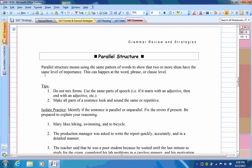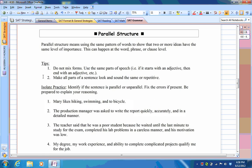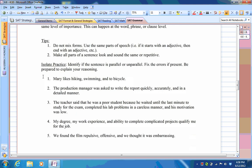The other type of error we're going to talk about is parallel structure. So in this case, we want everything that we say to be structured the same way. We never want to mix up forms. We only use the same part of speech. So if it starts with an adjective, then make sure everything else starts with an adjective. And also make all parts of the sentence look and sound the same and repetitive. So if we look at number one here, Mary likes hiking, swimming, and to bicycle.